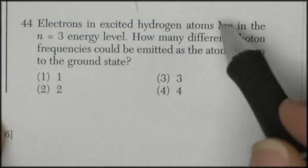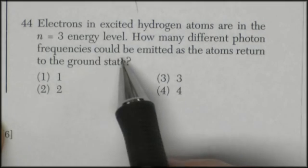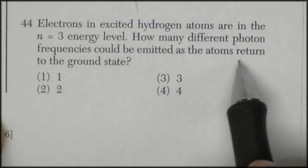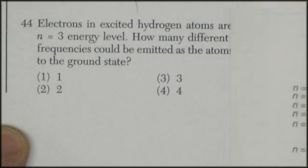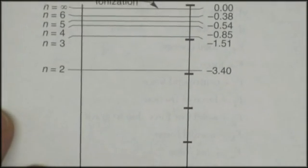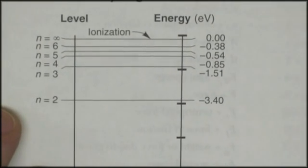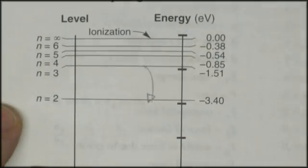Question 44. Electrons and excited hydrogen are in the N3 energy state. How many different photon frequencies could be emitted as the atom returns to the ground state? So this could be, this is like one of those IQ tricks. Make sure you count the real triangle. So I could jump from N3 down to N2. That would produce a photon.